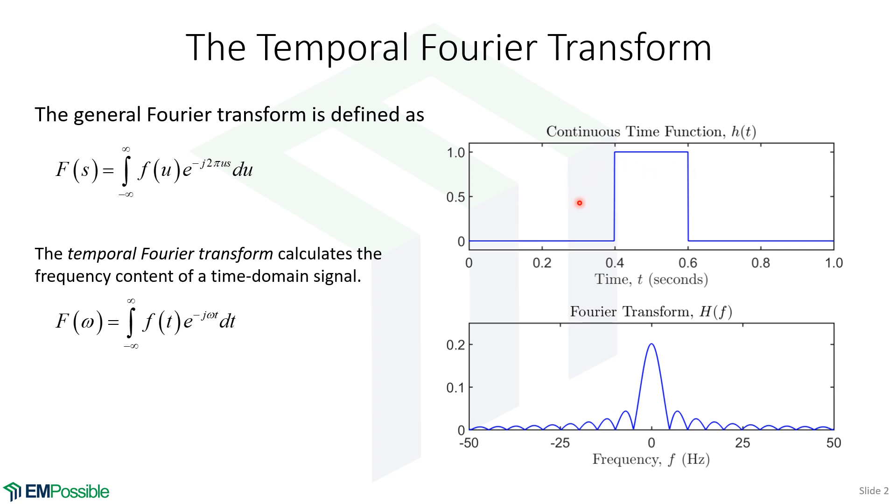Now, in this case, the original signal is a square wave and we get some kind of sinc function looking thing. So that's the temporal Fourier transform.